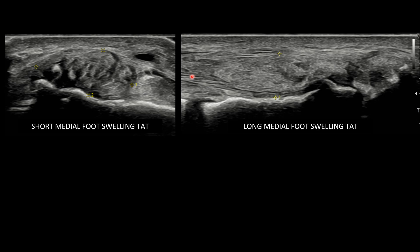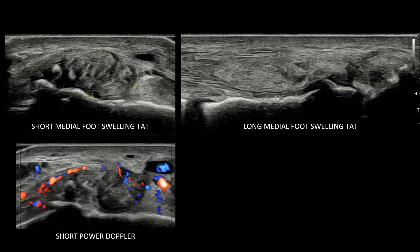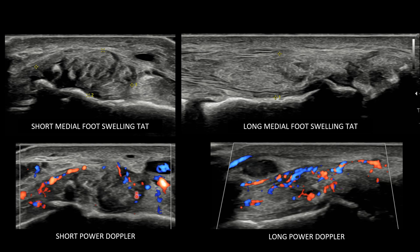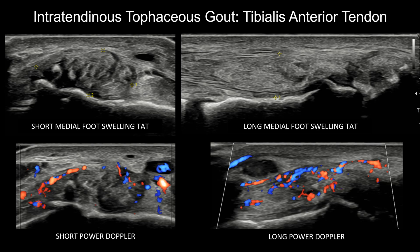Speaking of intratendinous gout, this patient presented with foot swelling at the medial foot, also with a history of gout. In short axis, there's an amorphous echogenic structure in the region of the tibialis anterior tendon. In long axis, you can see the tendon fibers, and within the tendon there is an amorphous echogenic mass-like structure containing punctate echogenic foci. As the tendon approaches its insertion on the medial cuneiform and first metatarsal, power Doppler imaging shows marked hyperemia and increased vascularity about the tendon, typical for inflammation. This is intratendinous tophaceous gout involving the tibialis anterior tendon.